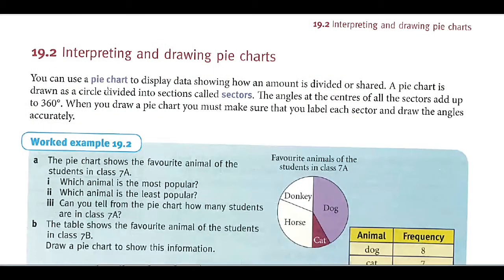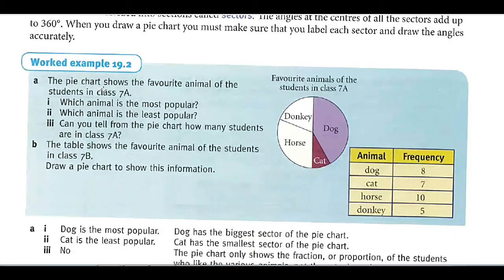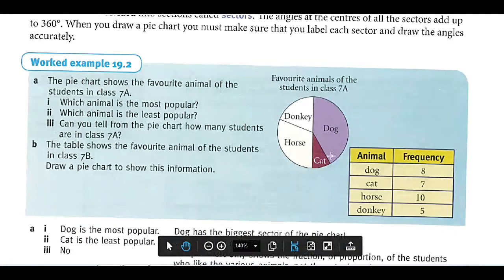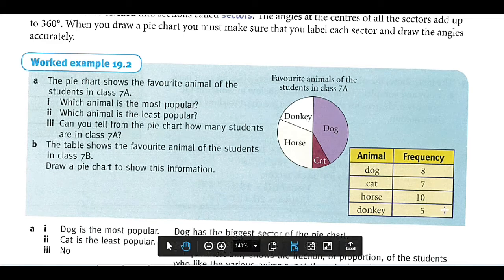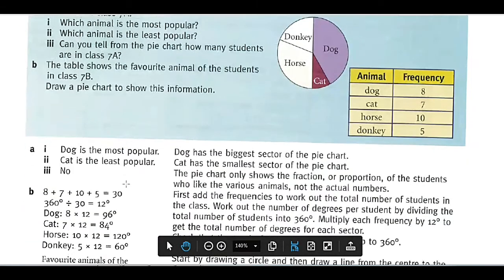Now 19.2: interpreting and drawing a pie chart. Here is your pie chart. The total angle must be 360 degrees. How will we find which animal is most popular? If you see this, you know dog is most popular. Which animal is least popular? Cat. Can you tell me from the pie chart how many students are in class 7? With the help of this, you are finding 10, 15, and 15 plus 15 is 30, so 30.